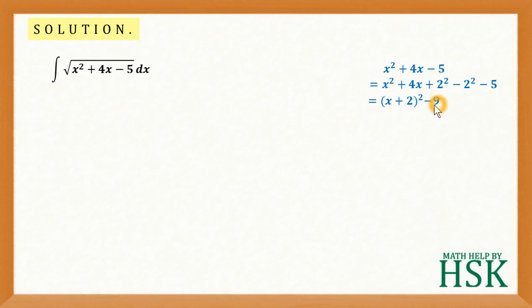So this 9 can be written as 3 square. So I am going to obtain x plus 2 whole square minus 3 square. This value goes in place of x square plus 4x minus 5.